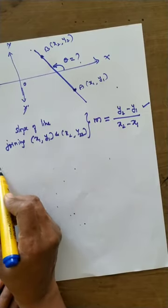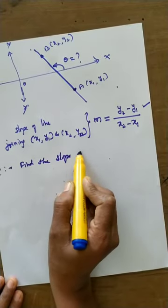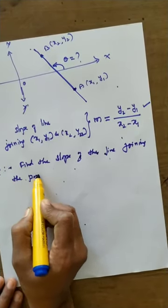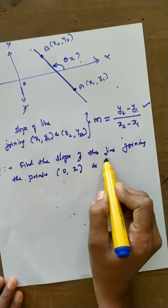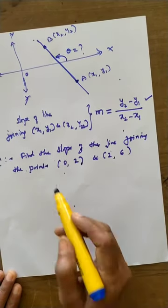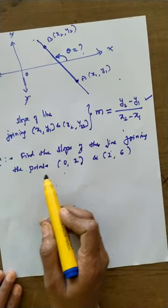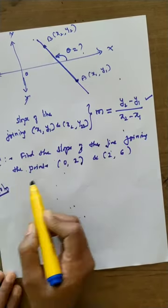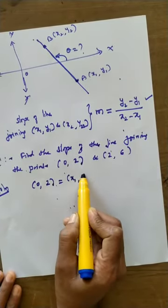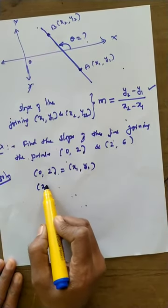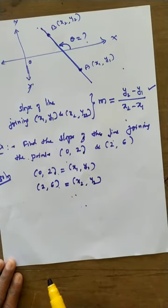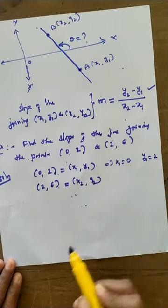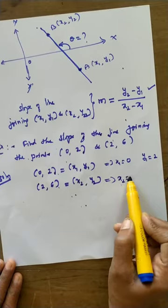For example: find the slope of the line joining the points (0, 2) and (2, 6). The first point (0, 2) is taken as (x1, y1) and the second point (2, 6) is taken as (x2, y2). So x1 = 0, y1 = 2, x2 = 2, y2 = 6.